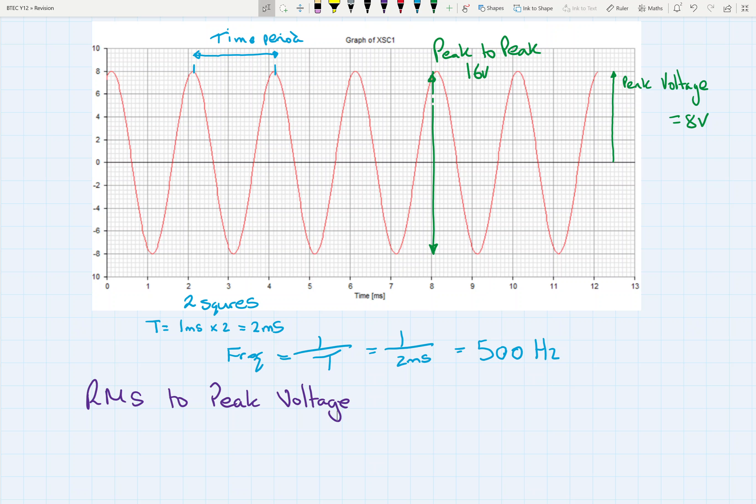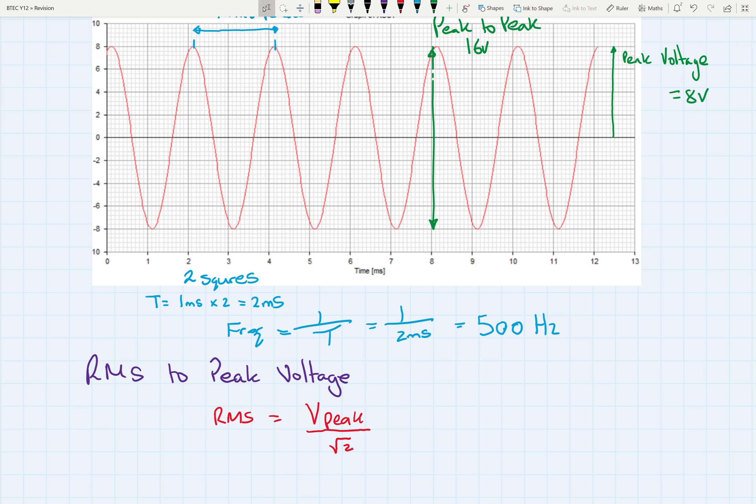So in this case, we've got the peak voltage, which is 8 volts, divided by root 2. So then that gives us a voltage of 5.65 volts RMS. So you always find that the RMS voltage is less than the peak.